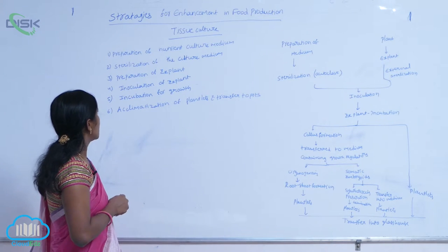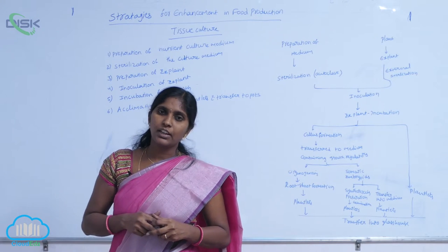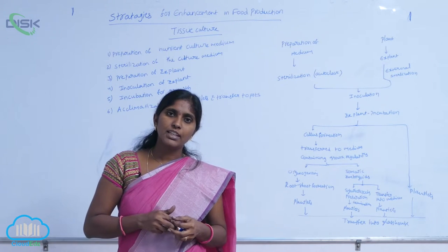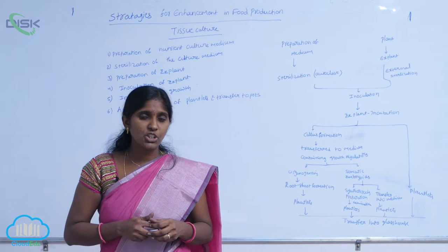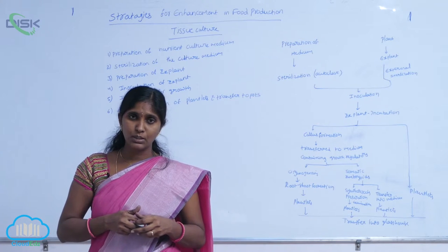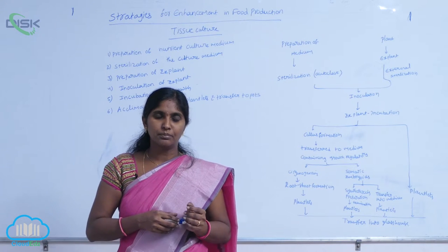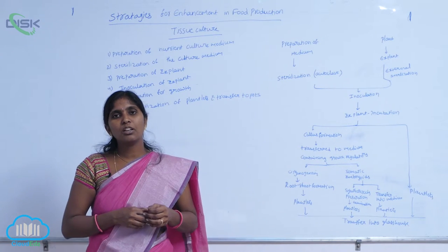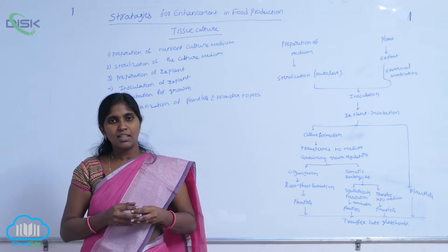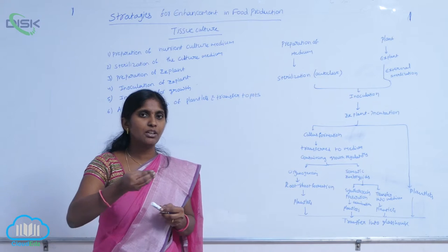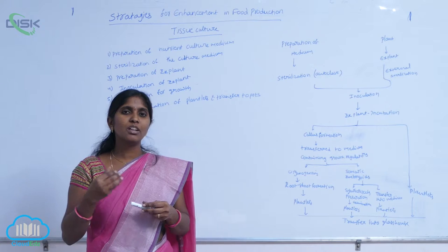The next step is inoculation of explant. For inoculation of explant, there is a need for aseptic conditions. That can be provided by a special apparatus — the laminar air flow chamber. At the laminar air flow chamber, by following aseptic conditions, the explant is introduced onto the culture medium. That procedure is called inoculation.